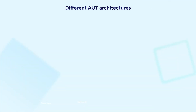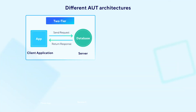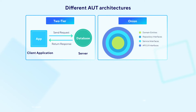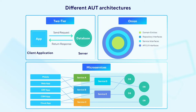Second, your system architecture also impacts your test automation solution. For instance, a monolithic architecture surely needs a different approach compared to a microservice architecture. That's why you need a different approach for each type of architecture.